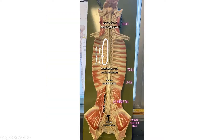This is a good model of the spinal cord. It shows a few things that we've talked about: the enlargements, the cauda equina, the filum terminale — this little strip — and the conus medullaris, where it comes to a tapering point right here.